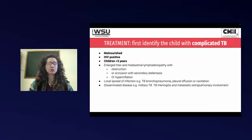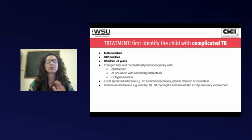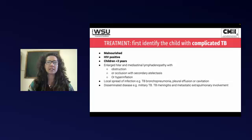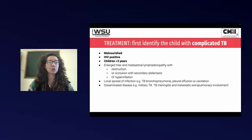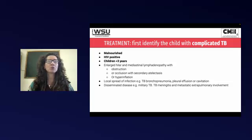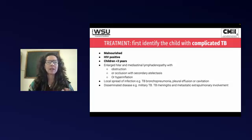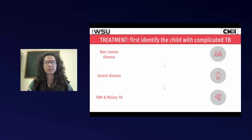So let's go into the treatment. Just like we used to, there will be different types of treatment depending on whether the child's got complicated or uncomplicated TB. Complicated TB is defined as, for example, any malnourished child, any HIV-positive child, and every child less than three years old. Lymphadenopathy only if it's causing some sort of occlusion or obstruction, and of course if they've got quite severe local disease or disseminated disease — all of those get the complicated regimen. Everybody else we're going to treat as non-severe disease.